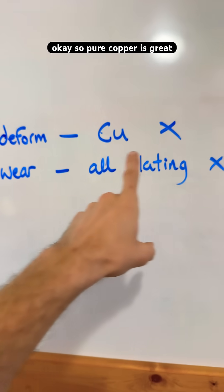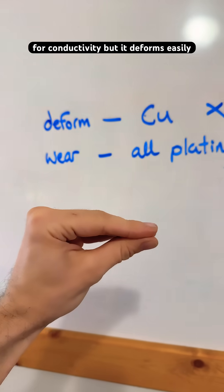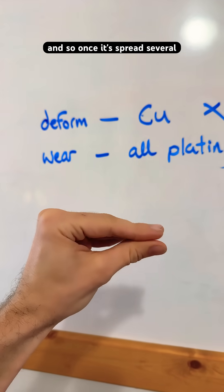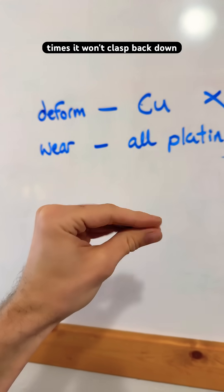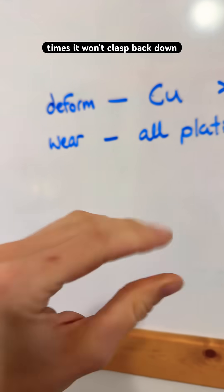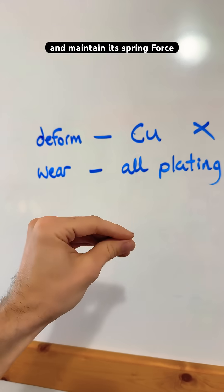Okay, so pure copper is great for conductivity, but it deforms easily. And so once it's spread several times, it won't clasp back down and maintain its spring force.